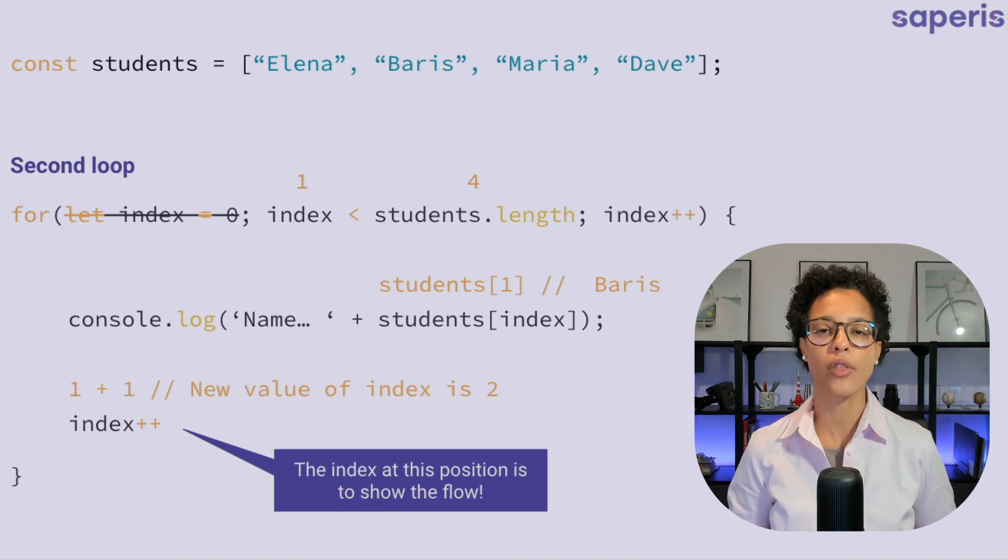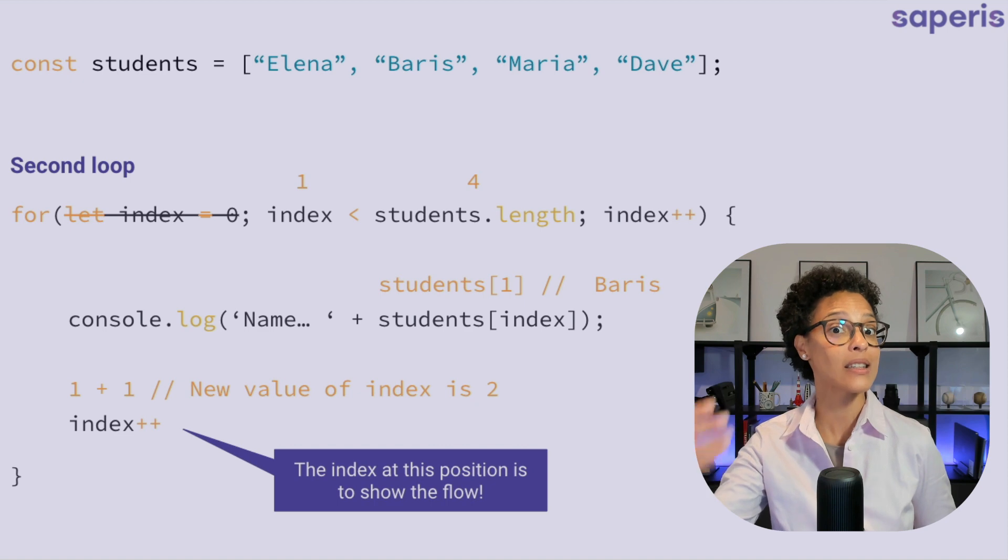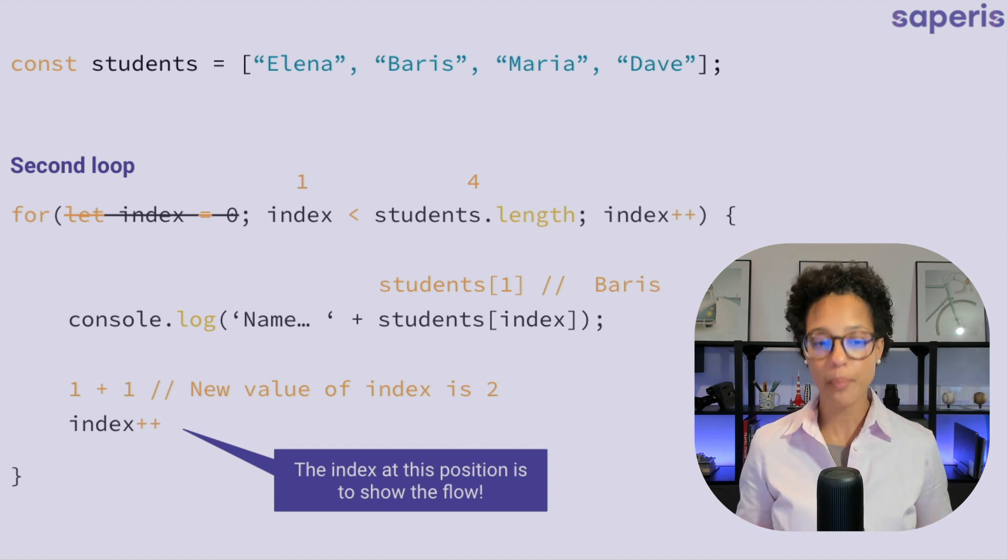So we jump back into the curly bracket. And this time we're using students index. And since index contains the value of one, we're accessing the index one of our array. In that case, this is the student Barish. And then again, once we've logged that out,